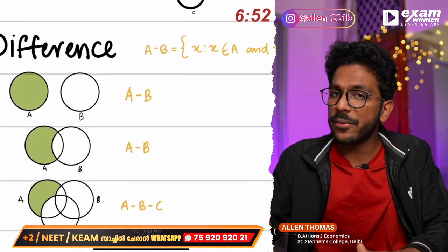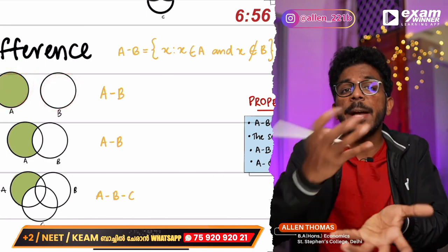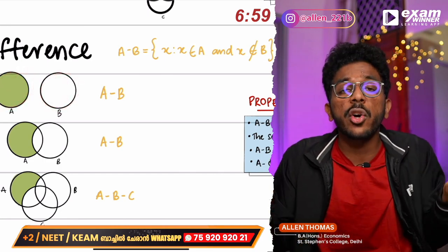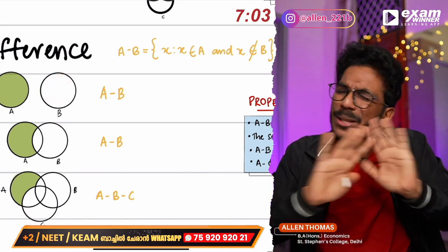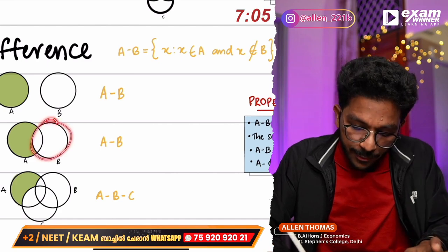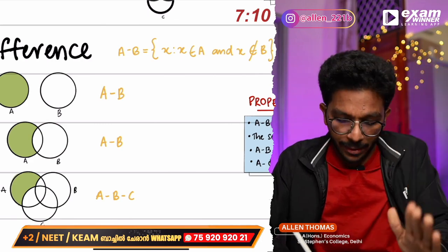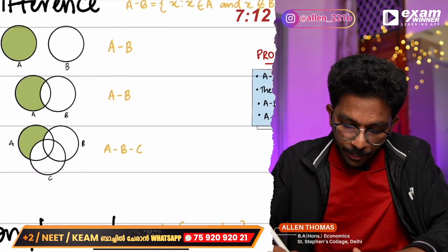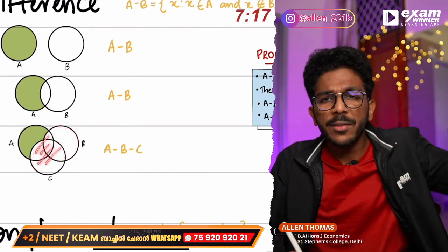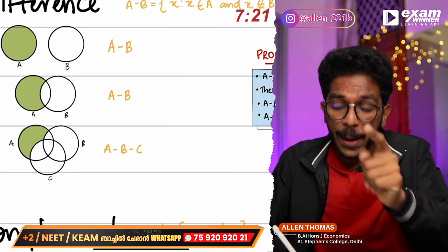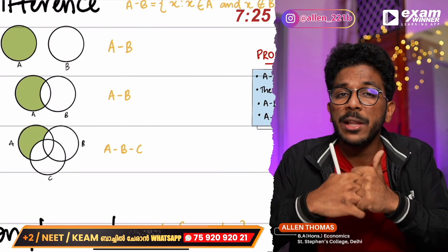This is what we call difference — subtraction. A minus B. If you have A and B as disjoint sets, there is no common element between B and A. A minus B removes B from A. This is A-B. Disjoint sets have no common elements.